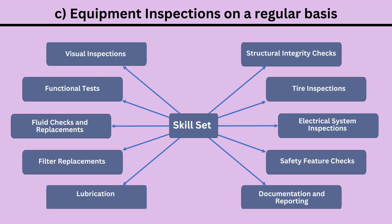Key inspection areas include: 1. Visual inspections. 2. Functional tests. 3. Fluid checks and replacements. 4. Filter replacements. 5. Lubrication. 6. Structural integrity checks. 7. Tire inspections. 8. Electrical system inspections. 9. Safety feature checks. 10. Documentation and reporting.